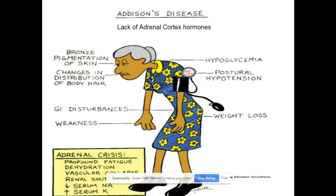Addison's disease is a lack of adrenal cortex hormones. Patients can exhibit bronze pigmentation of the skin, changes in hair distribution, GI disturbances, weight loss, weakness, postural hypotension, and hypoglycemia. The symptoms of an adrenal crisis include profound fatigue, dehydration, vascular collapse, renal shutdown, decreased serum sodium, and increased serum potassium.